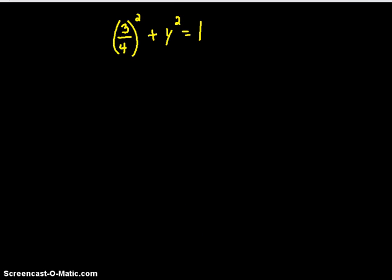So if you have three-fourths squared, when you square the numerator you wind up having nine, and if you square the denominator you should have 16, plus y squared equals one. And then from there, you subtract 9 over 16 from both sides.